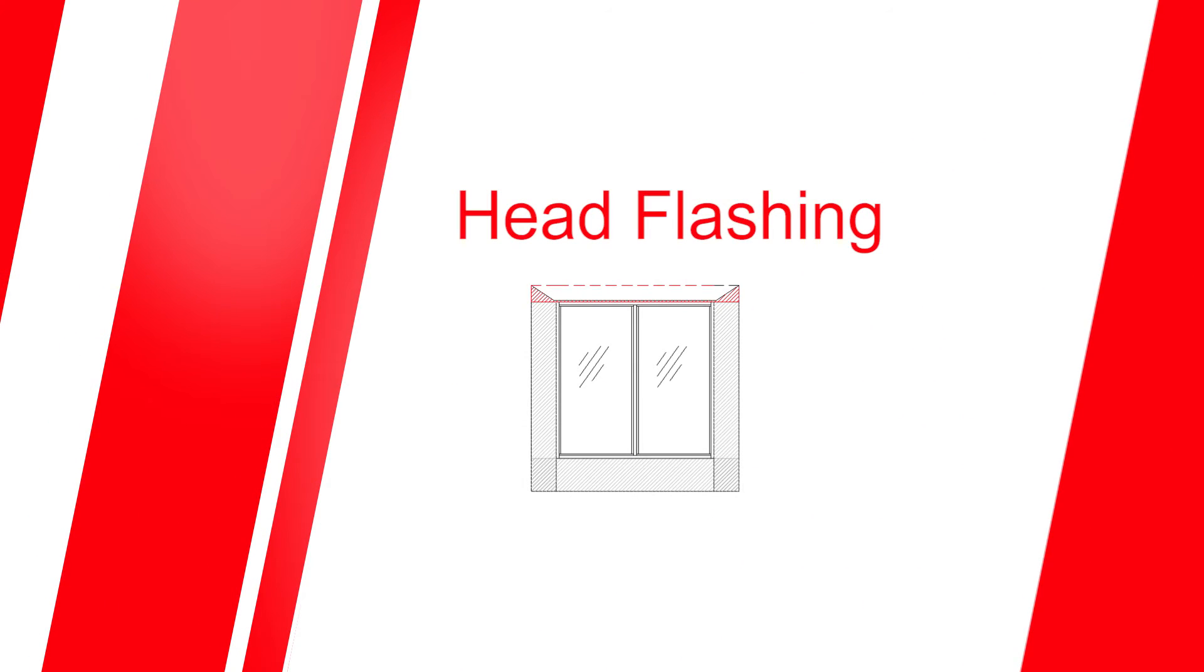Where the top of the window is not protected by the eaves it will be necessary to fit a head flashing. The head flashing should be fixed to the wall frame or into the internal brickwork above the window and extend outward to cover the head of the window and overlap the jam flashing on each side.